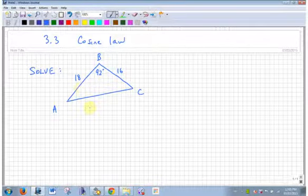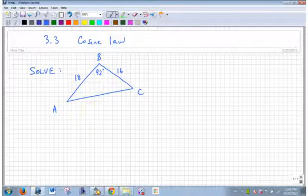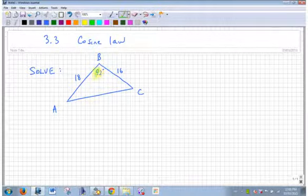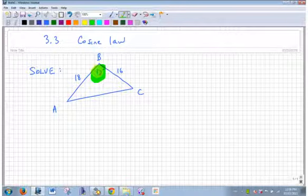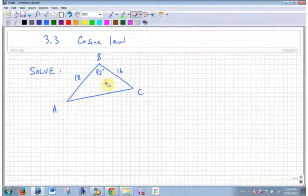So I can't use SOHCAHTOA, why not? Because it's not 90 degrees. You can't use SOHCAHTOA if you don't have a right angle.